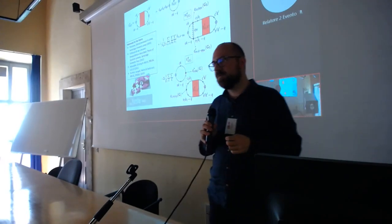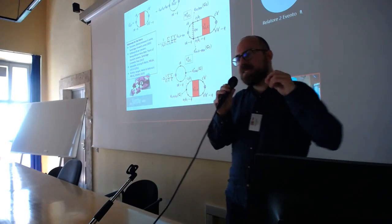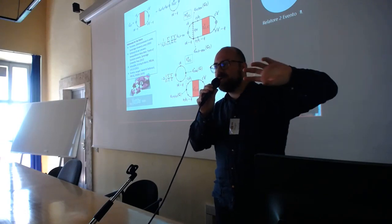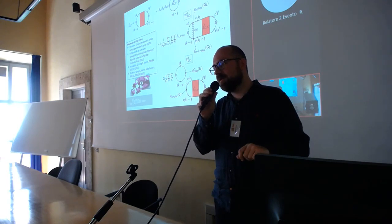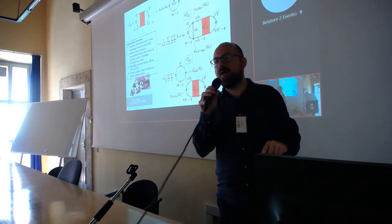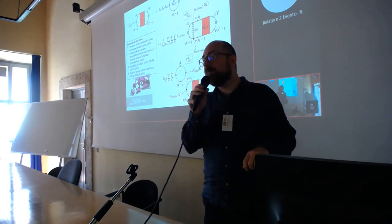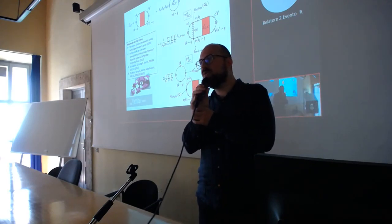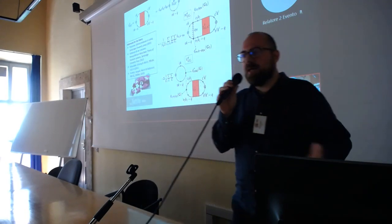The exciton-phonon coupling constant is obtained by taking the electron-phonon coupling matrix element and rotating it into the exciton basis. The electron-phonon coupling elements are computed with density functional perturbation theory, not within Yambo — you need DFPT codes such as Quantum ESPRESSO or Abinit.